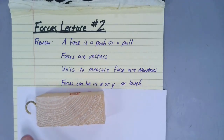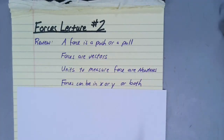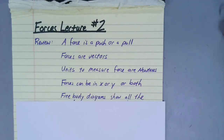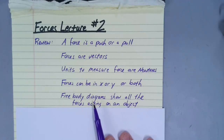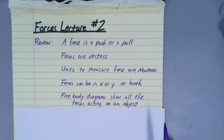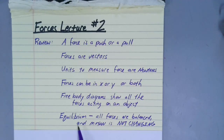Forces are vectors and they can be applied in a direction that is either x or y or both at the same time. The point of today's presentation is to talk about free body diagrams and how we draw them, because these are very helpful in showing all of the forces that are acting on an object. If we look at all the forces acting on an object, we can get into a situation called equilibrium.